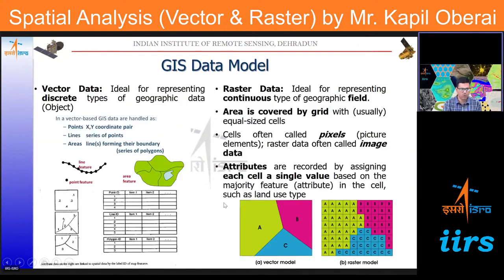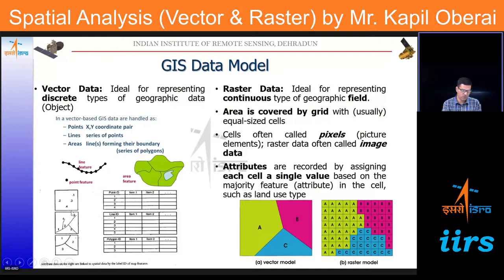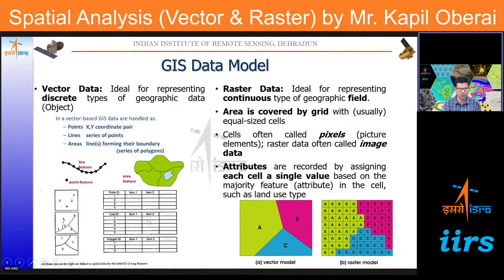In the vector model, each feature has an associated feature attribute table linked to the phenomenon being studied. For example, if the points are locations, the attributes could include the name of the location and related details. For line features like roads, attributes could be the road name, type, and speed limit. Similarly, any number of attributes can be associated with polygon or area features.